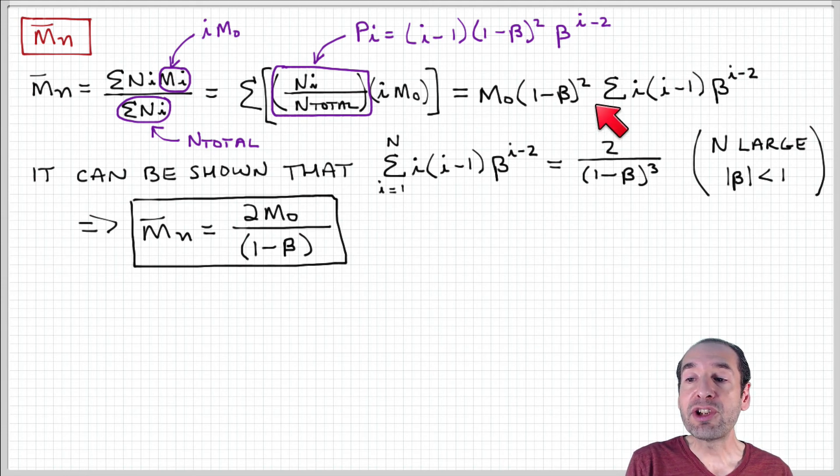It can be shown that this sum equals this quantity. And again, this is using the similar mathematical arguments that we used, that I showed you in step growth polymerization. I'm not going to go through them here, but similar relationships exist, and this is one of them for this summation.